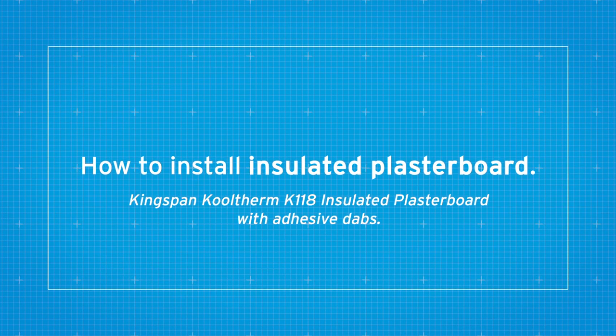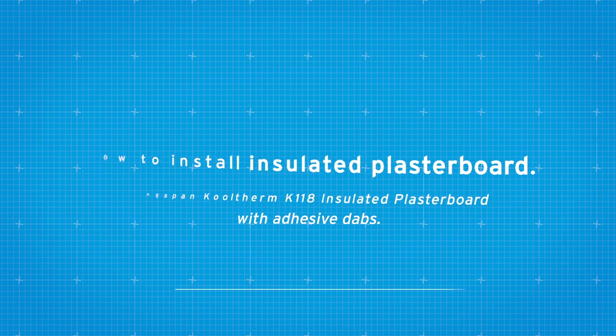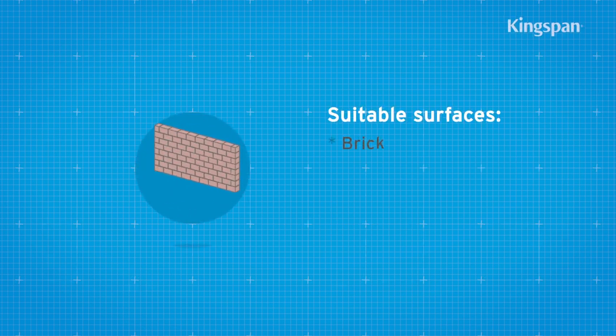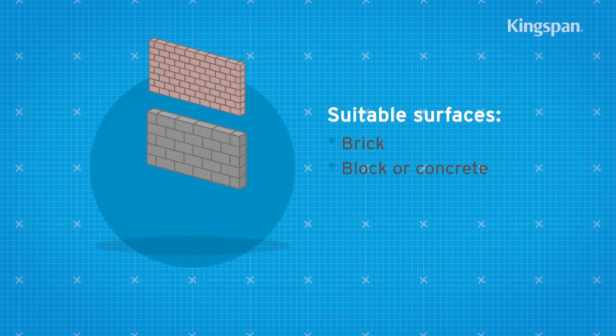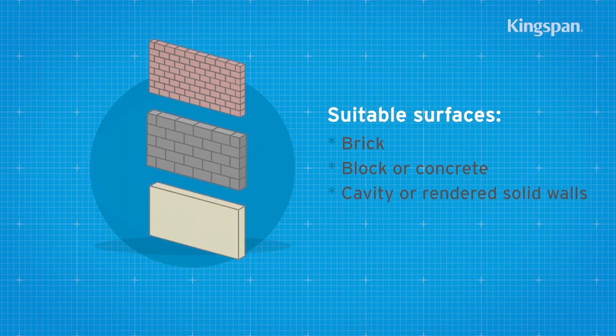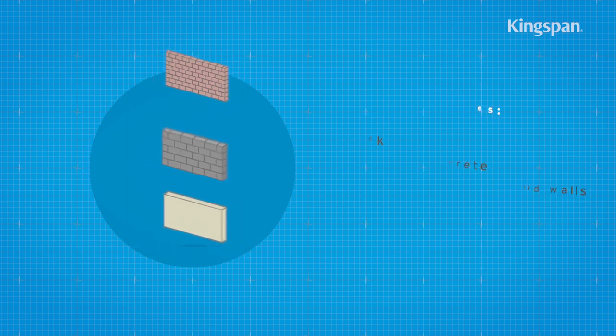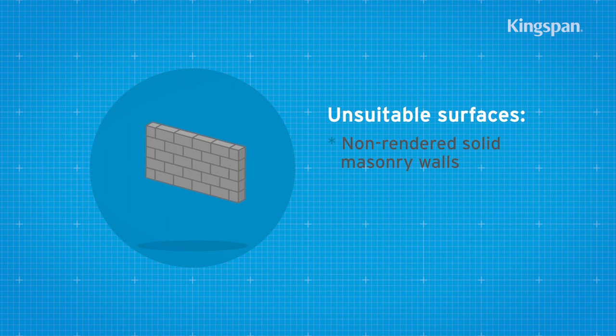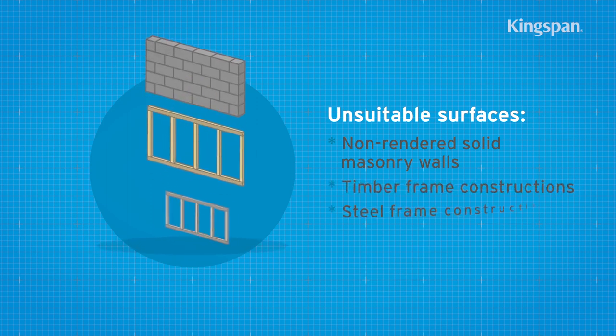How to install insulated plasterboard. This method is suitable for surfaces that are dry, stable and free from moisture penetration. This method is not suitable where there is a risk of moisture penetration.